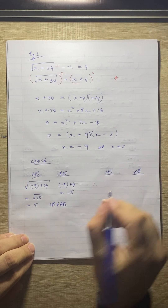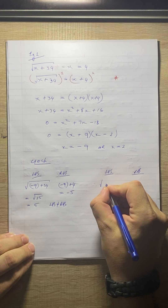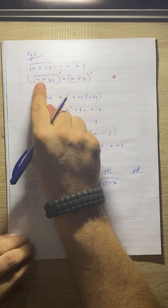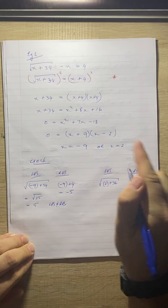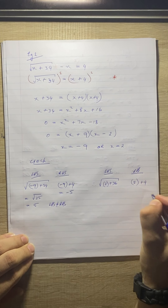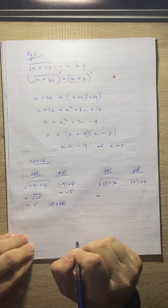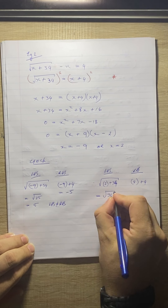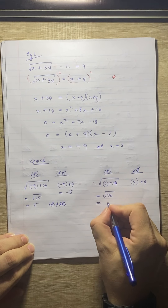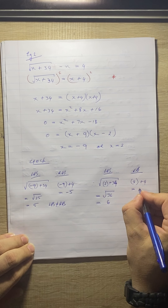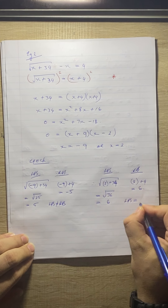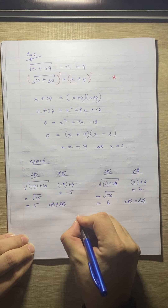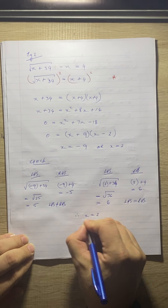We must check the other x value. On the left-hand side, substituting x equals 2 into the square root of x plus 34, we get the square root of 2 plus 34 which is the square root of 36, which is 6. On the right-hand side, we get 2 plus 4 which is 6. The left-hand side equals the right-hand side, so x equals 2 is a solution. Therefore, x equals 2 is the only solution.